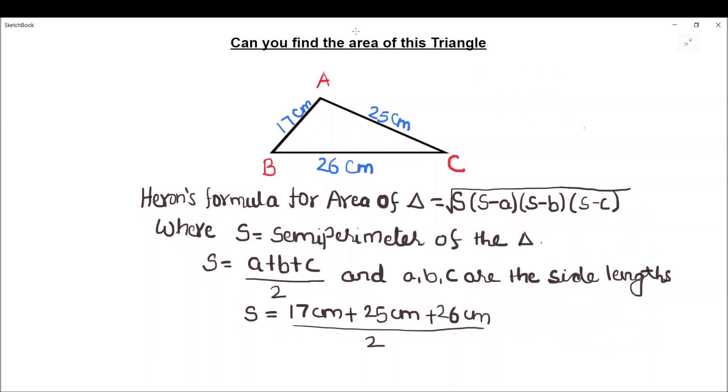And it comes out to be 68 divided by 2, which is equal to 34 centimeters. So now we have the value of s as 34 centimeters, a is equal to 17 centimeters, b is equal to 25 centimeters, and c is equal to 26 centimeters. We are going to find the area using Heron's formula.